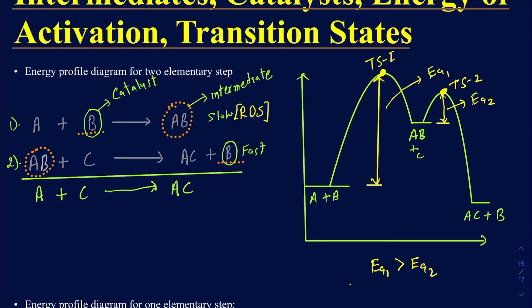The highest points in those energy barriers — for example, the peak of the first barrier — we call that transition state 1. The highest point for the second step is transition state 2. So with two steps, you have two transition states and one intermediate. Finally, the energy of the reaction is the difference between the energies of your reactants and products — that could be delta H or delta G, depending on what energy variable is on the y-axis.